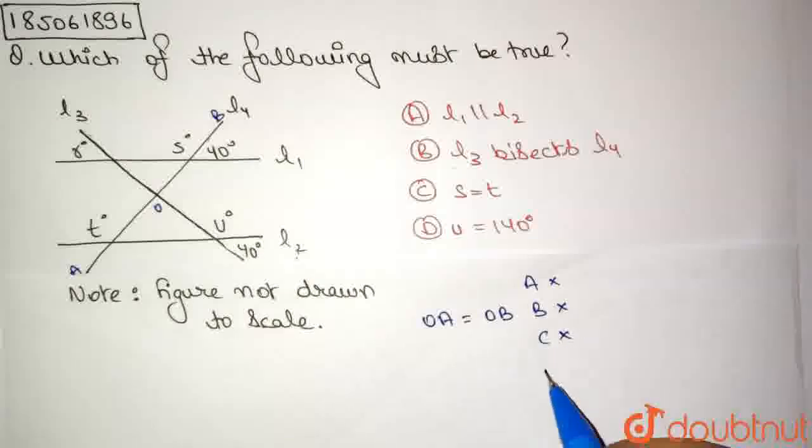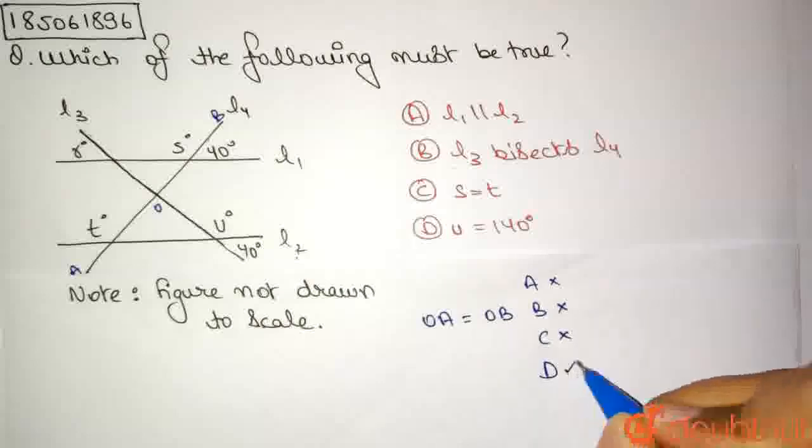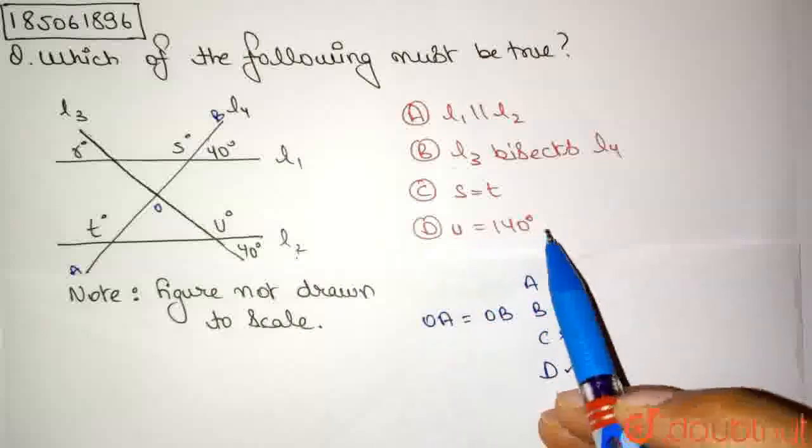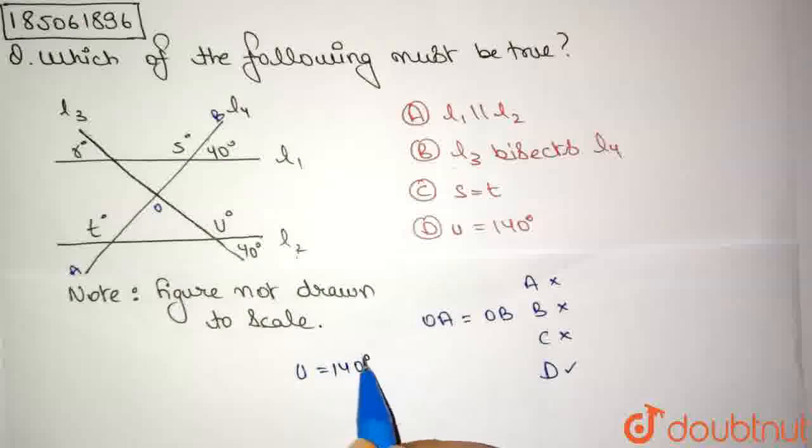And option D. We can say that if three options are false, the fourth option should be correct. So let us look at what option D says. U is equal to 140 degrees. It is telling us that U equals 140 degrees.